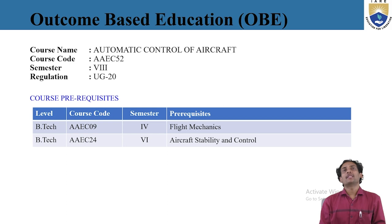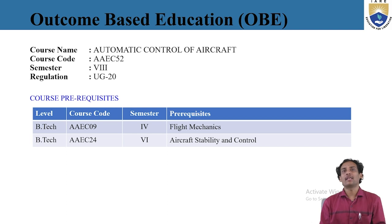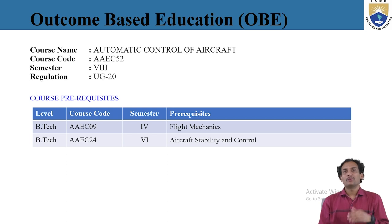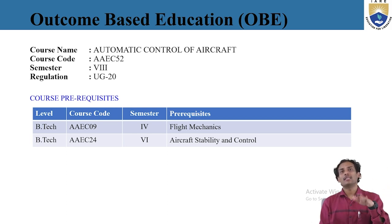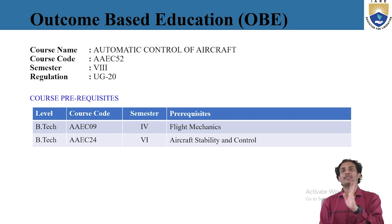The course is titled Automatic Control of Aircraft, designed for UG20 regulations. The prerequisite courses are Flight Mechanics and Aircraft Stability and Control, which you have already covered in your fourth and sixth semesters. This course is a continuation and advancement of those subjects.